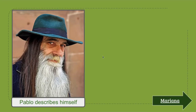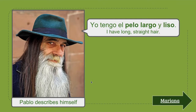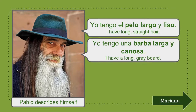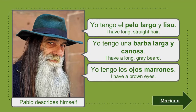So in this situation, Pablo, this interesting looking gentleman right here, is going to describe himself. The first thing he says is: yo tengo el pelo largo y liso. Yo tengo una barba larga y canosa. Yo tengo los ojos marrones.